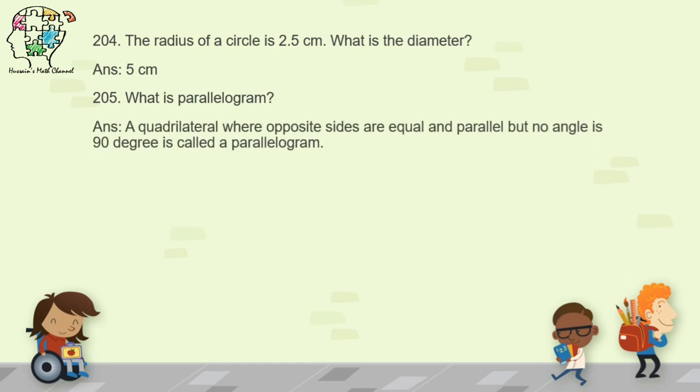Next question: what is a parallelogram? As you can see on the screen, a quadrilateral where opposite sides are equal and parallel but no angle is 90 degrees is called a parallelogram.